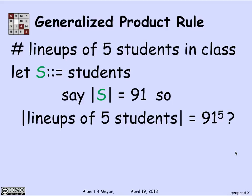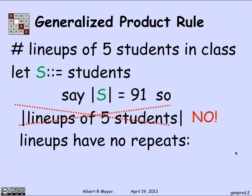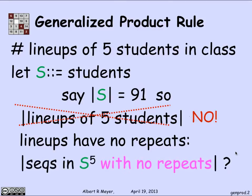And so the product rule would say take 91 to the fifth as the number of lineups of five students. And that would be correct if the same student could appear twice in line, but that of course is impossible with real students. So the lineups have no repeats, and what we're really counting is the number of those sequences of length five of students with no repeats.